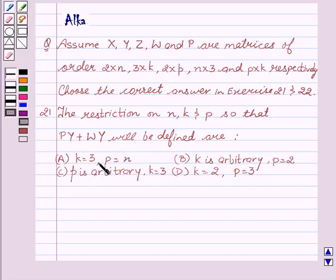Option A: K equal to 3, P equal to N. Option B: K is arbitrary, P equal to 2. Option C: P is arbitrary, K equal to 3. Option D: K equal to 2, P equal to 3. Now let's start with the solution.